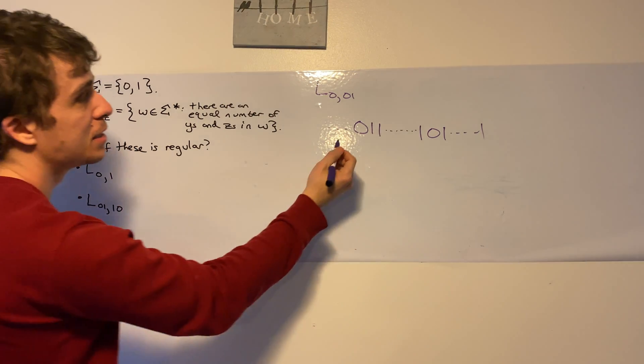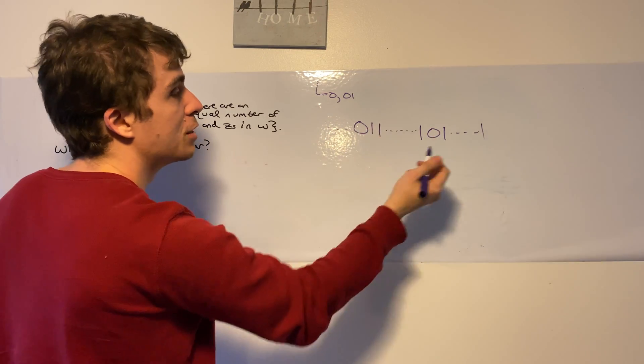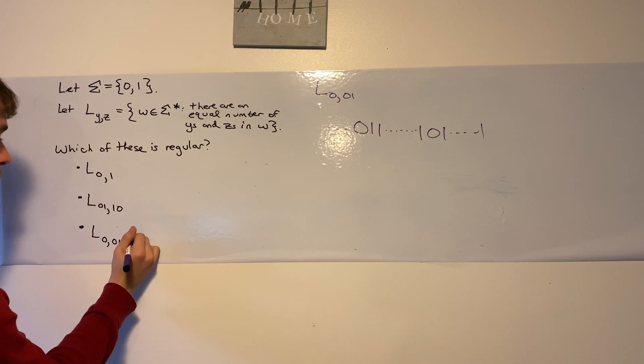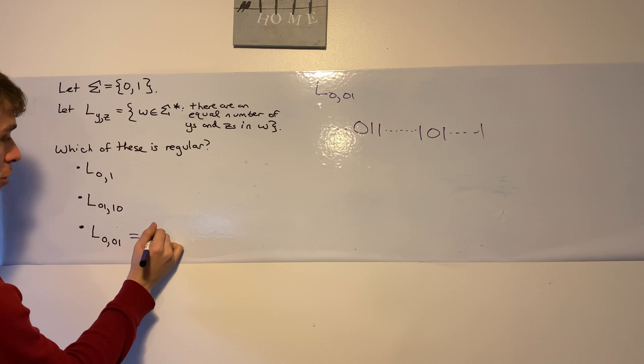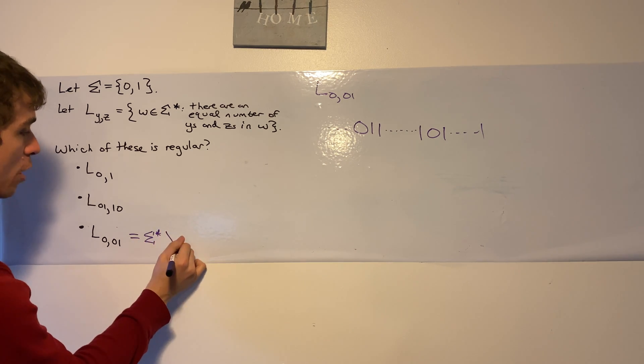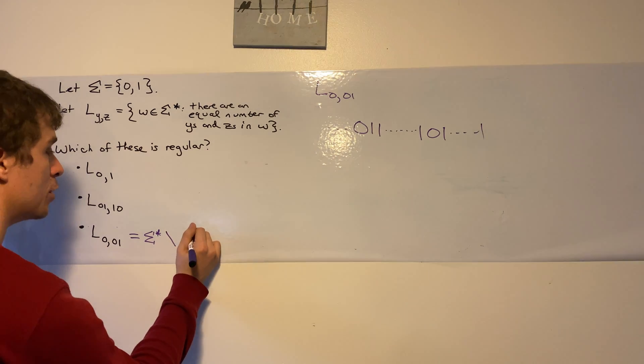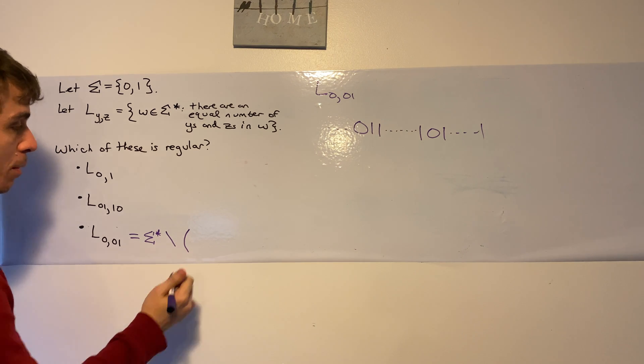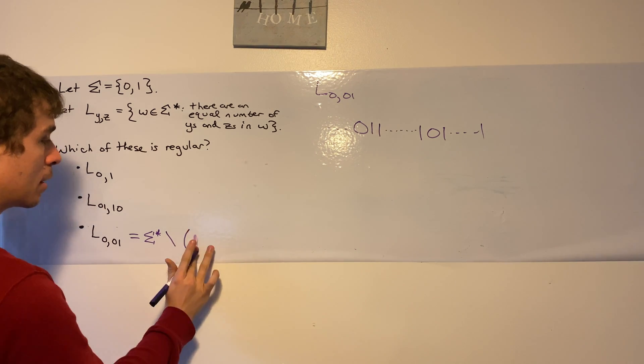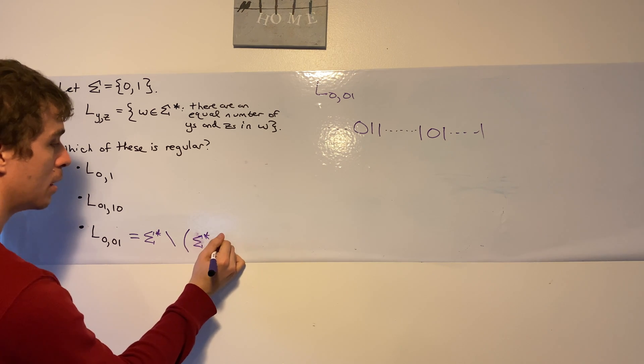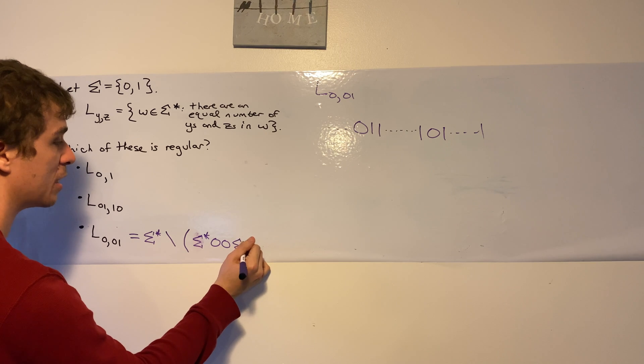So how can we define this? This is the set of all strings without a 0, 0 in it. So we can actually define this really easily to say this is the set of all strings, so sigma star, take away all strings that have a 0, 0 in it.